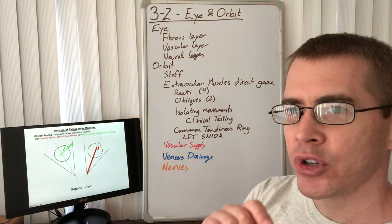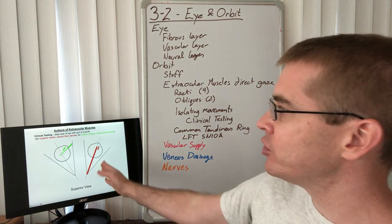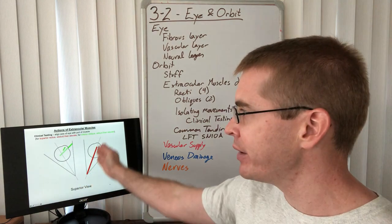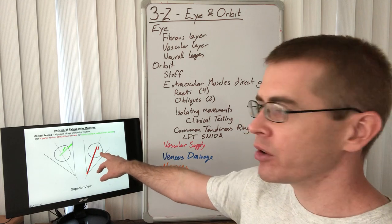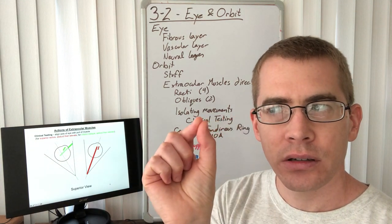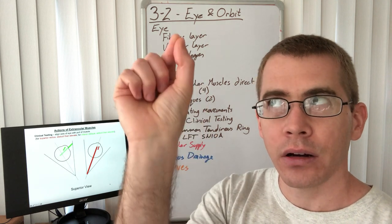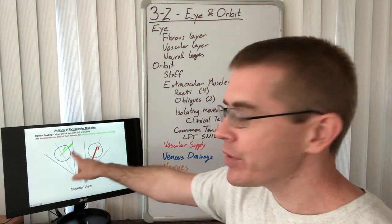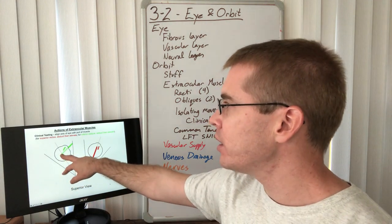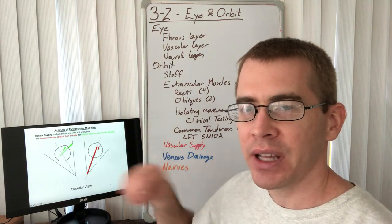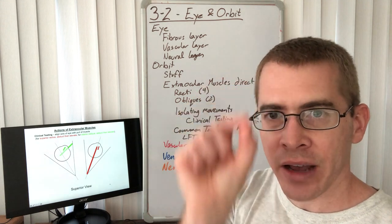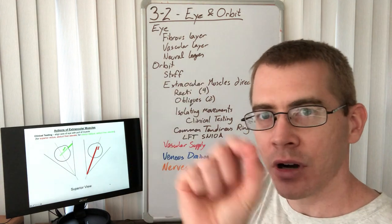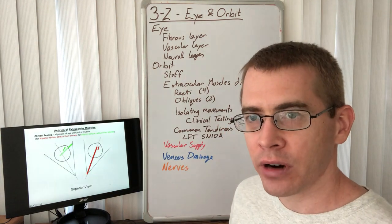To test superior rectus, slightly abduct the eye and then have the patient follow movement upward — that eye will move only up. Simultaneously, the inferior oblique on the contralateral eye is isolated as well. This is how the H pattern of testing is performed — the test your optometrist does to check cranial nerve function and identify any deficits.